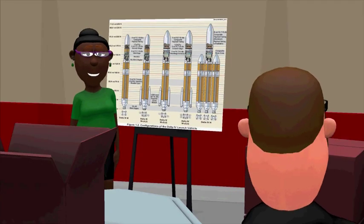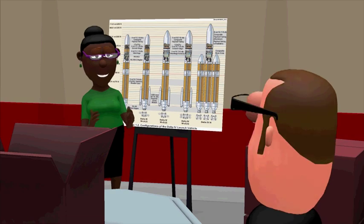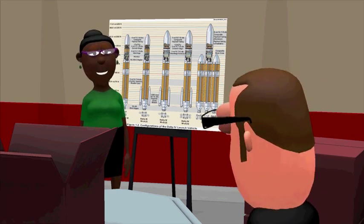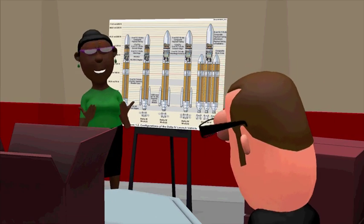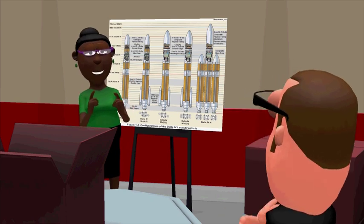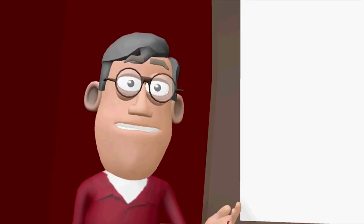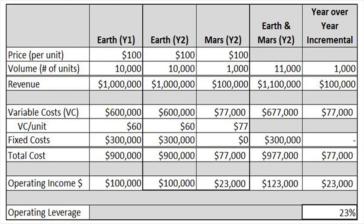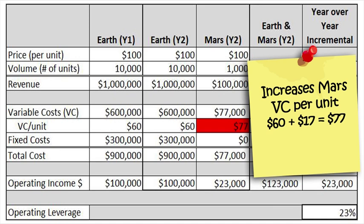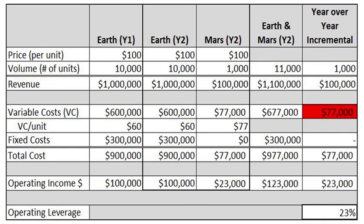To enable us to get product to our new customer efficiently, the management team secures a large rocket with expanded payload capacity, resulting in significant increase to the variable outbound freight cost of $17 per unit to ship our product to Mars. How does this variable cost per unit increase impact operating leverage? The variable outbound freight cost of $17 per unit raises our variable cost for Mars from $60 per unit to $77 per unit, increasing our incremental variable cost to $77,000.